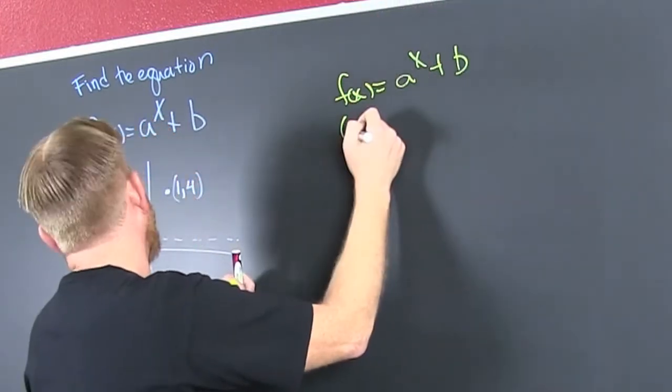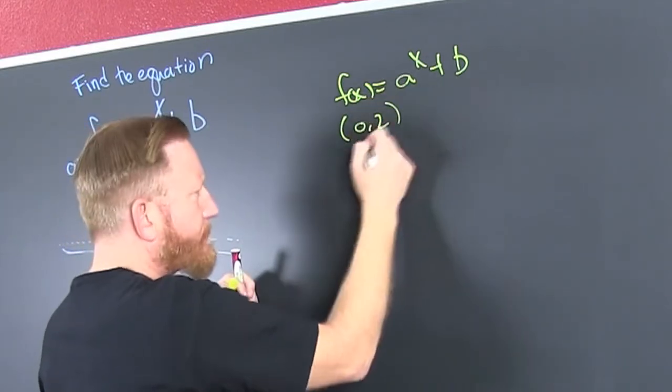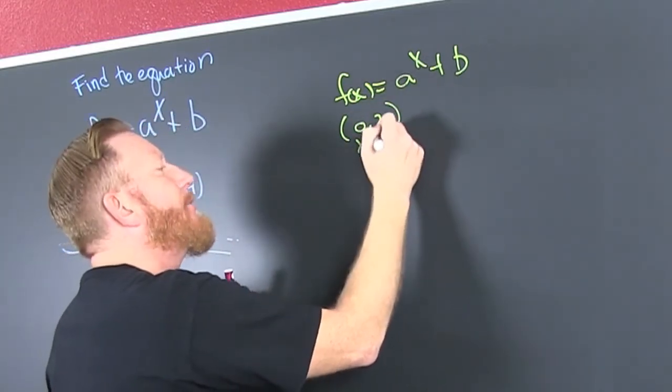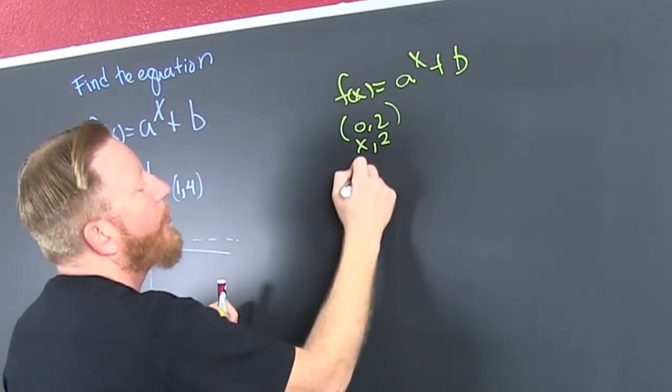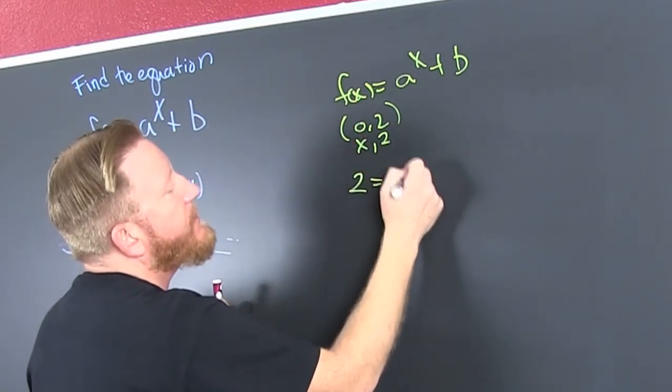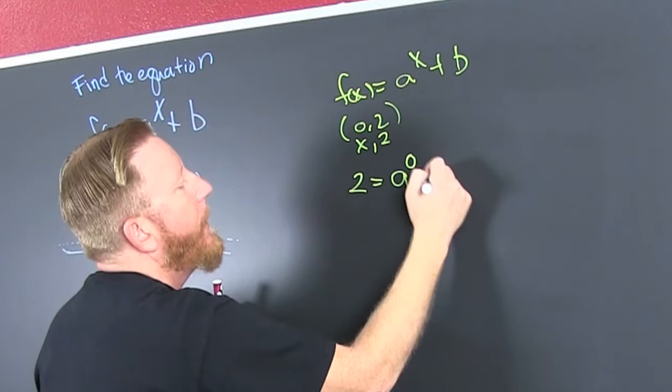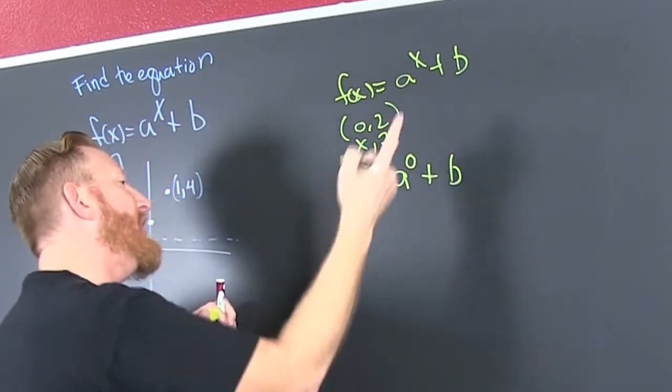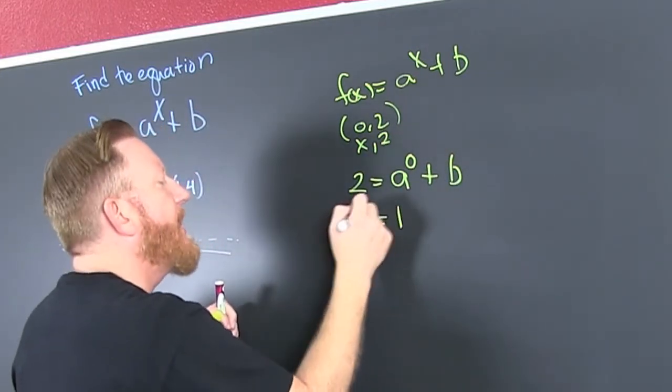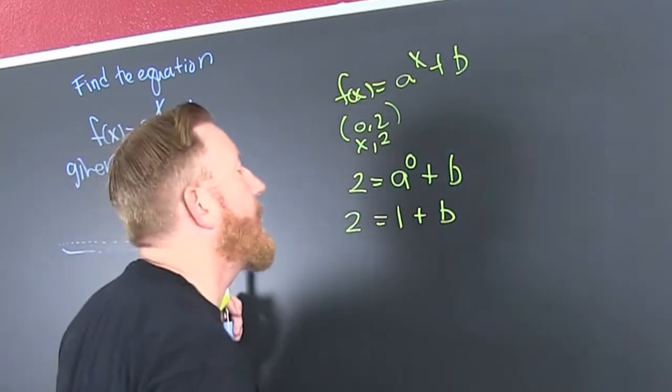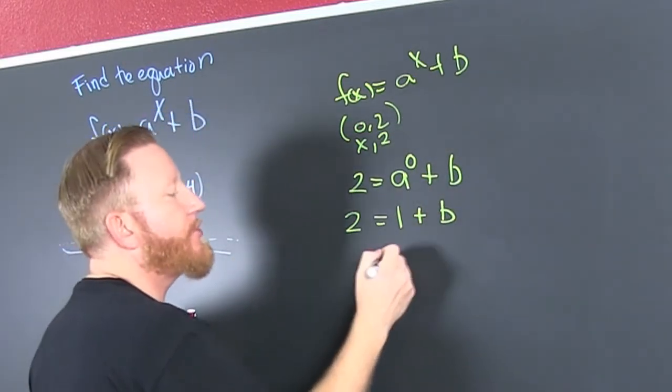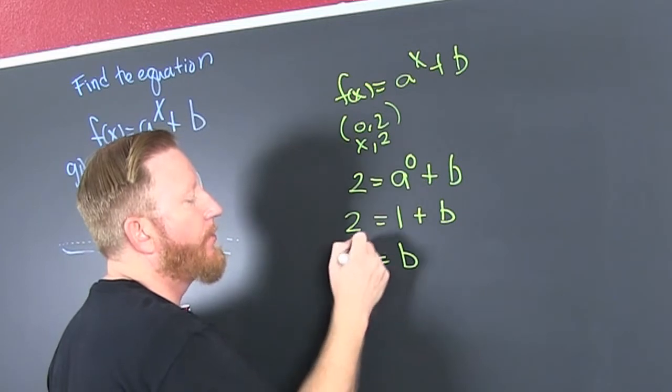Let's take that first point. That first point is 0, 2. It says x is 0 and y is 2. f of x is the function formerly known as y. So 2 is equal to a to the 0 plus b. Now, anything to the 0 power is 1, except for maybe 0 itself, and we're not even including that in an exponential function. You subtract that off, and you find that b is equal to 1.